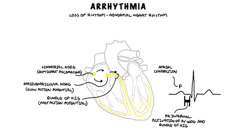Abnormalities of conduction in the AV node and bundle of His are manifested on ECG as 1st, 2nd, or 3rd degree heart blocks.